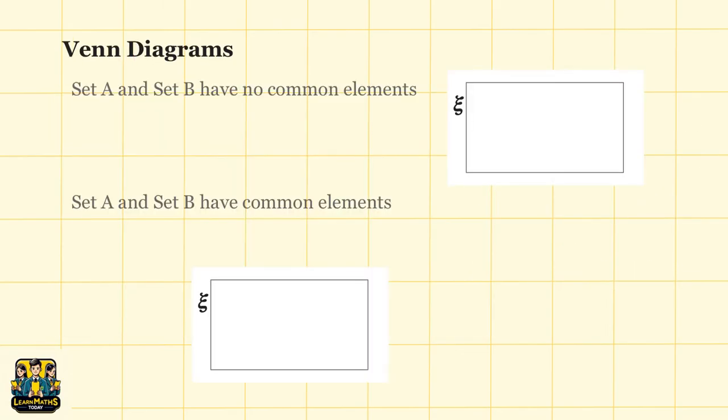So let's start doing some exercises to get us familiarized with Venn diagrams. Question 1: Set A and set B have no common elements. How can we draw set A and set B in the space provided on the right side? You can see the universal set element containing the big rectangle box.